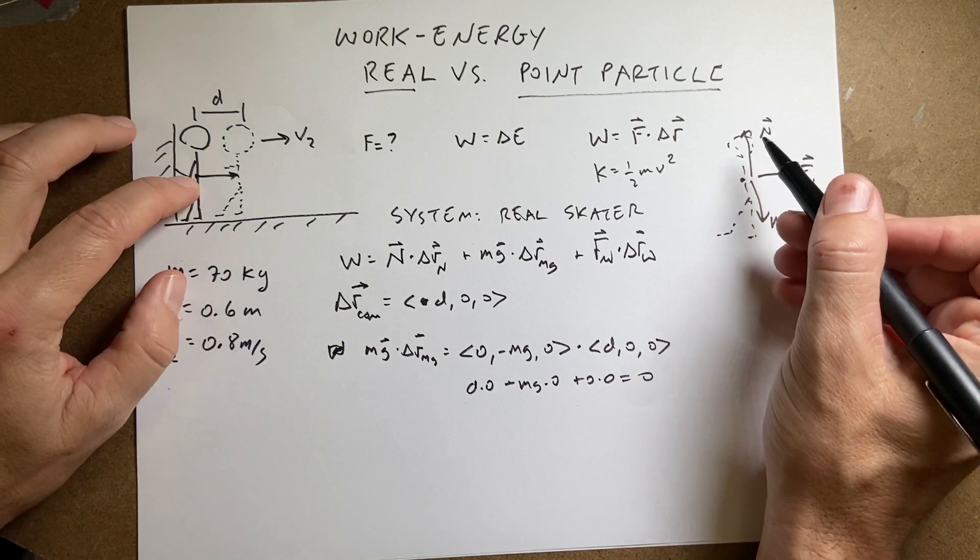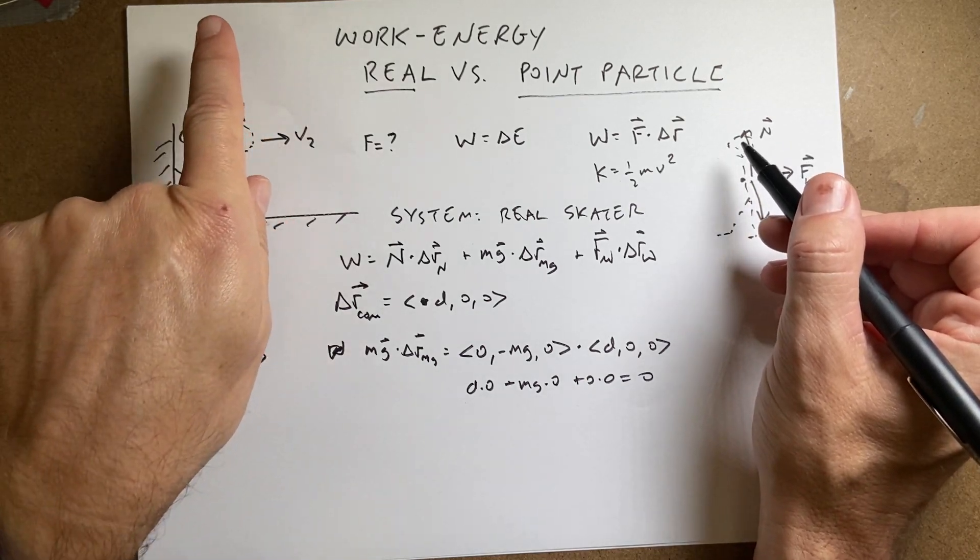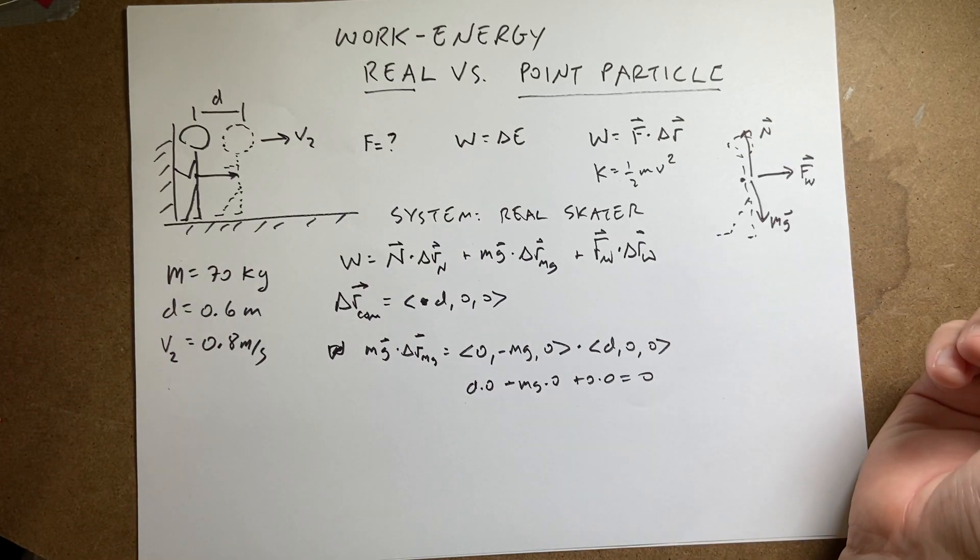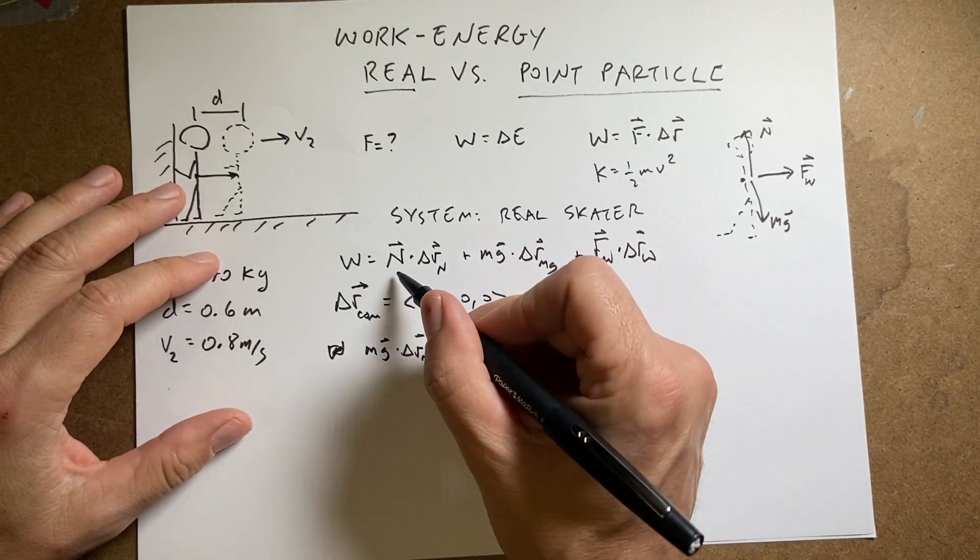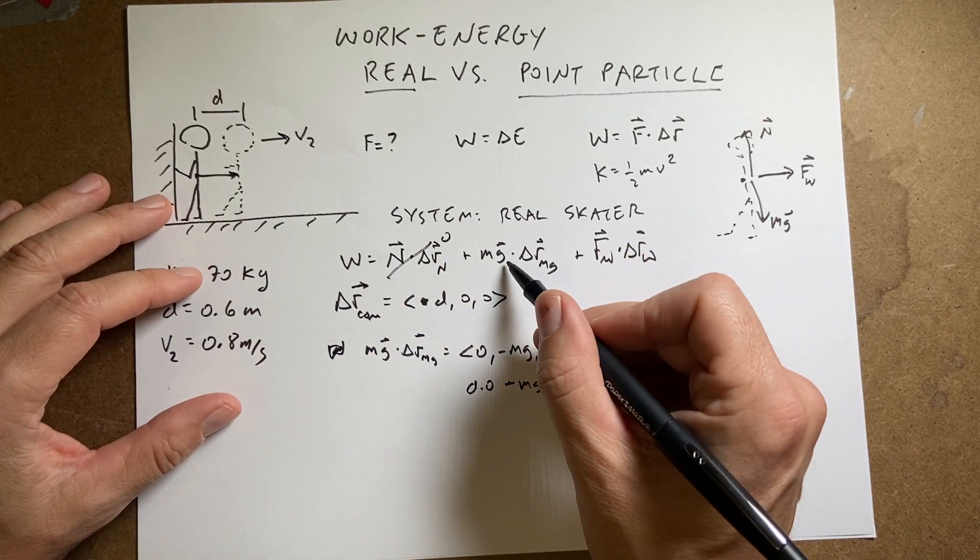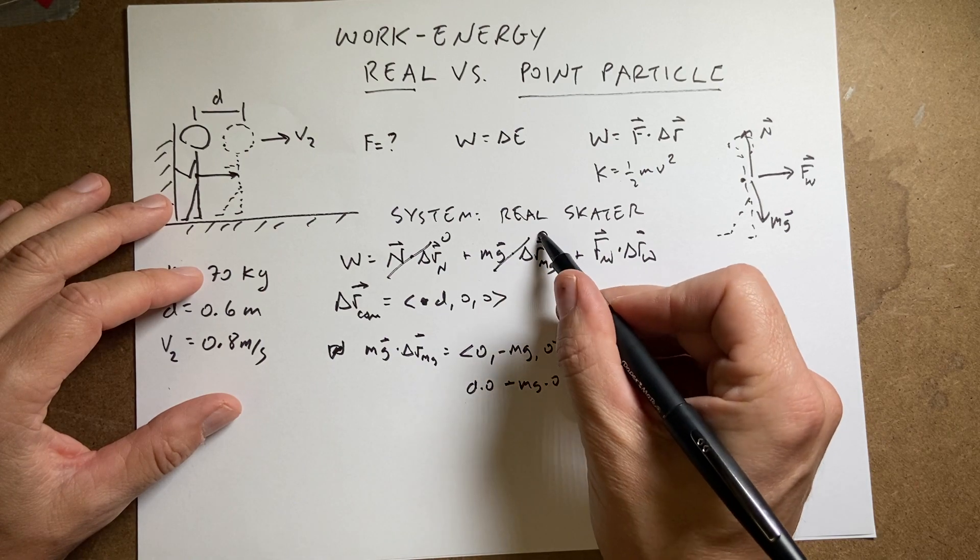What about the normal force? It's the same deal, right? Because the normal force is in the y direction, the displacement is in the x direction. So there's no work done by that. So this is going to be zero. This is going to be zero.